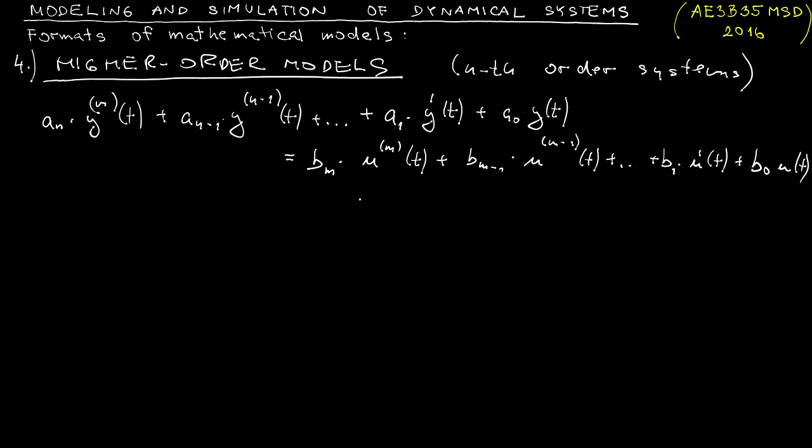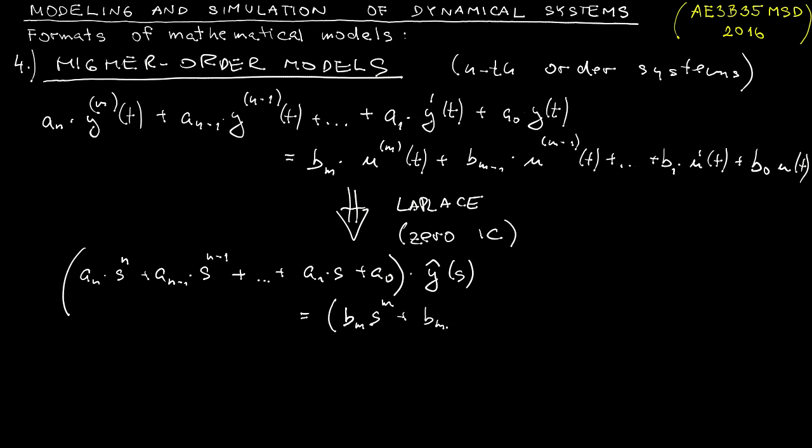Now assuming zero initial conditions we can apply Laplace transform to convert this ordinary differential equation into an algebraic equation. So on the left-hand side of the equation we will have a polynomial in s with the coefficients a0 through an which multiplies the Laplace transform of the output. On the right-hand side we will have a polynomial again in the s variable, the coefficients b0 through bm, multiplying the Laplace transform of the input.